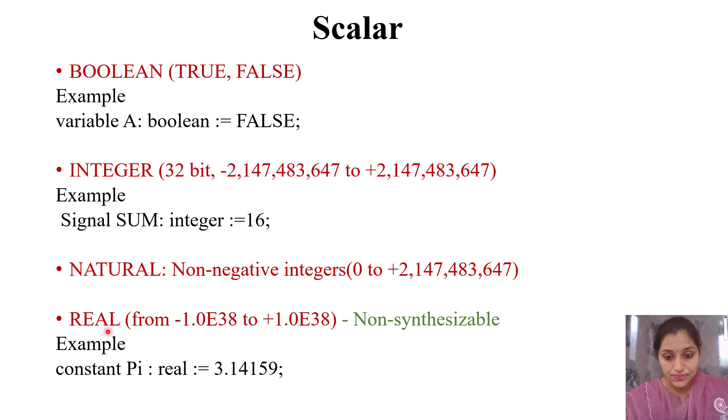Real data type ranges from -1e38 to 1e38. Remember, real data type is non-synthesizable, meaning we cannot generate hardware from it. Real is used for simulation purposes only. An example is constant pi of type real with value 3.14159.